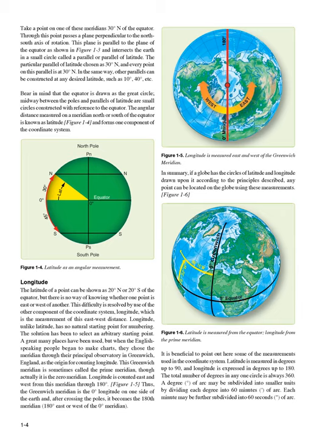Longitude. The latitude of a point can be shown as 20 degrees north or south of the equator, but there is no way of knowing whether one point is east or west of another. This difficulty is resolved by use of longitude, which is the measurement of east-west distance. Longitude has no natural starting point for numbering; the solution has been to select an arbitrary starting point. English-speaking people chose the meridian through their principal observatory in Greenwich, England, as the origin. This Greenwich meridian is sometimes called the prime meridian. Longitude is counted east and west from this meridian through 180 degrees, with the Greenwich meridian becoming the 180th meridian after crossing the poles.